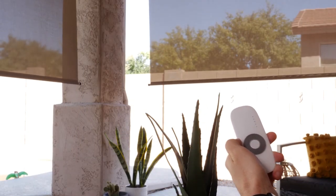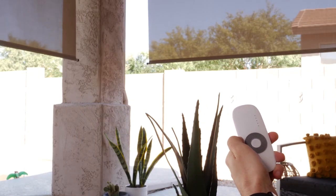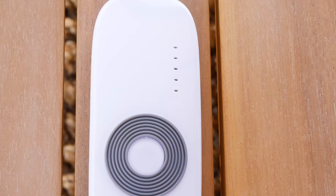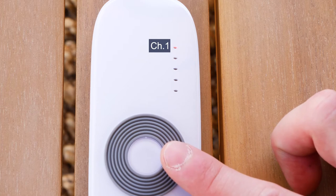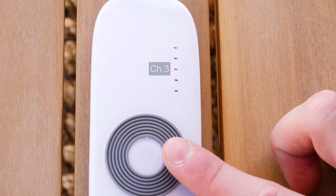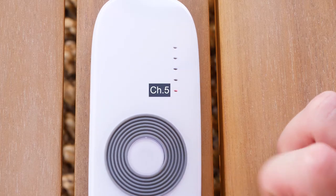Your remote can operate up to five shades using one channel per shade. The five indicator lights tell you which channel you're operating, starting with channel 1 at the top, then 2, 3, 4, and 5 at the bottom.